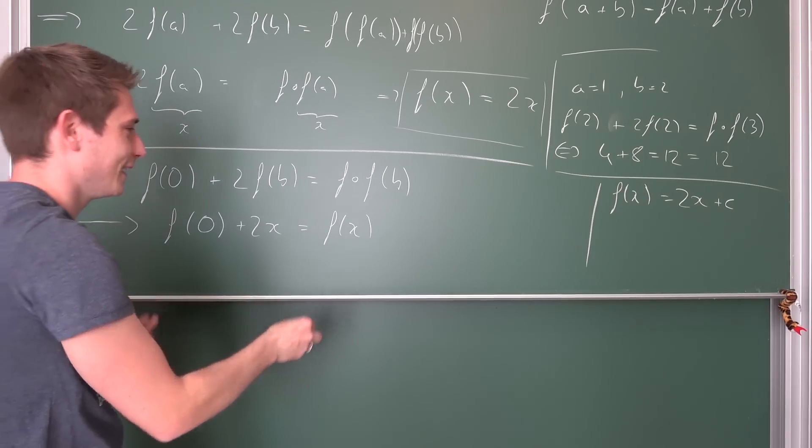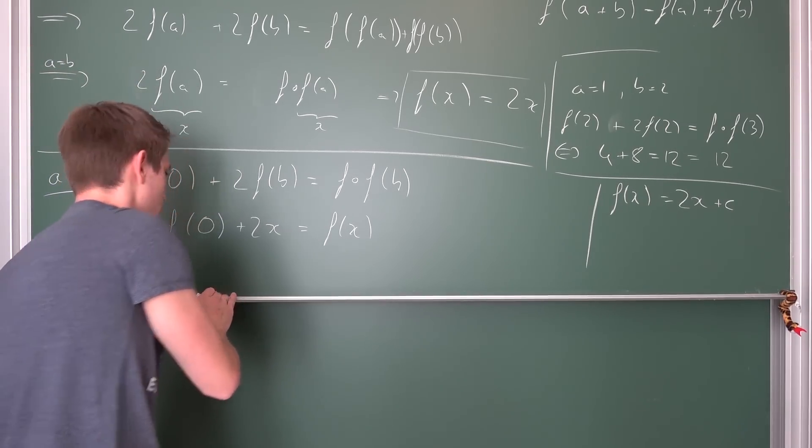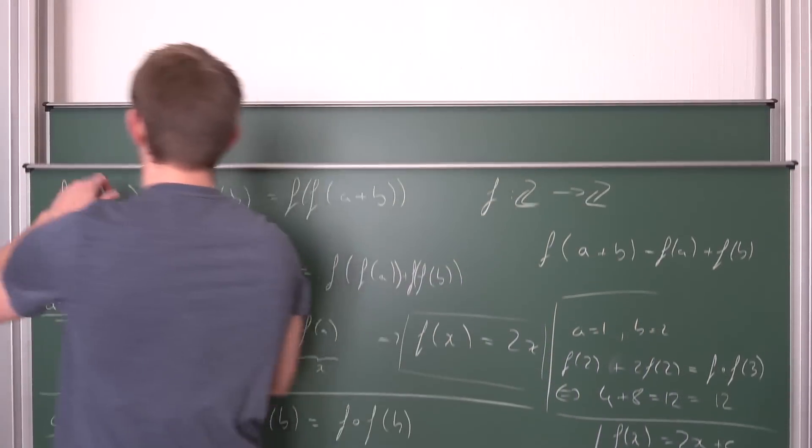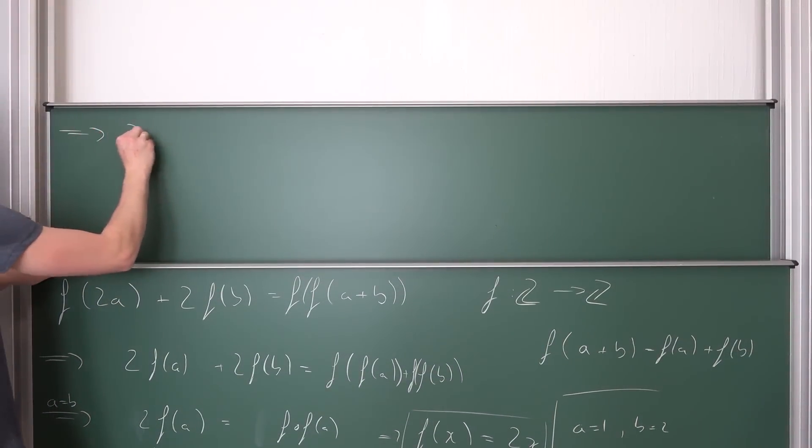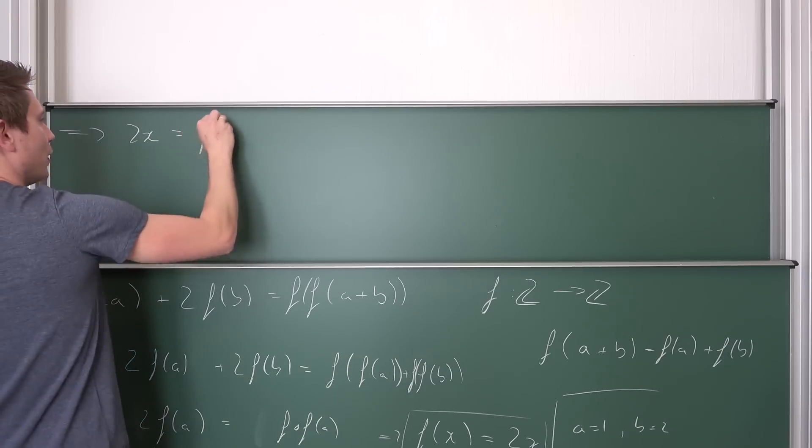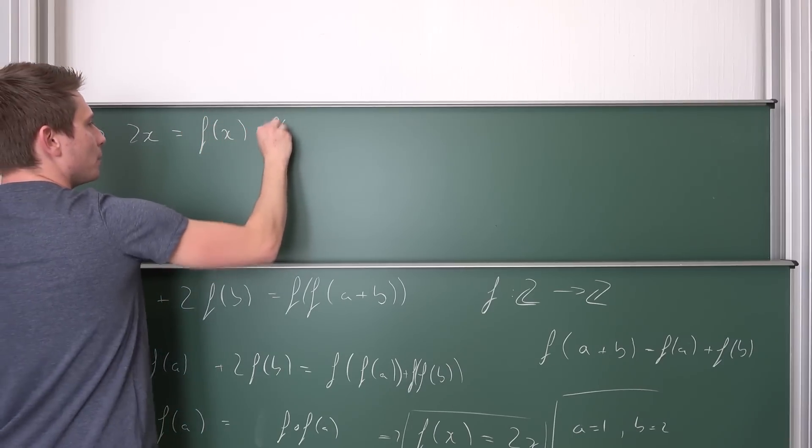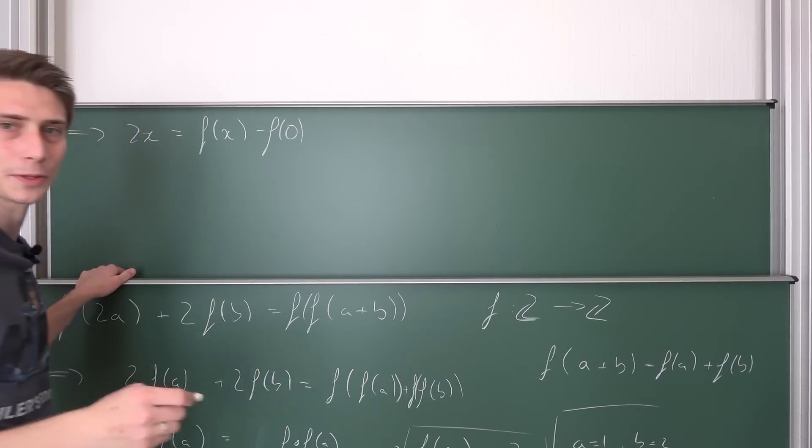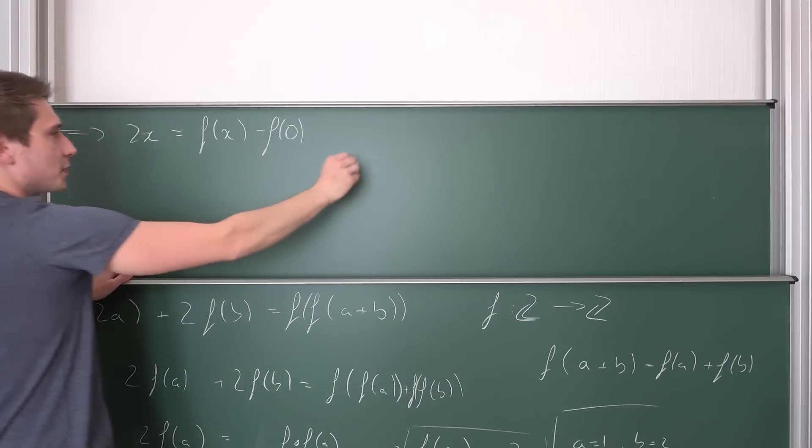I'm having kind of a weird idea. Let us subtract f(0) from both sides. 2x is f(x) minus f(0). Once again, we are assuming that everything is continuous. I hope you can see something. This thing right here...